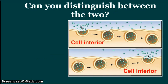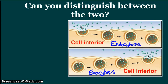Can you distinguish between the two? Which one is endocytosis and which one is exocytosis? This one is endocytosis — movement into the cell — and this one is exocytosis — movement of molecules out of the cell.